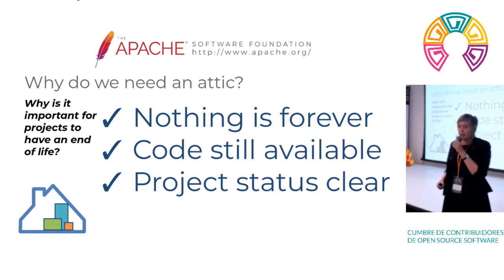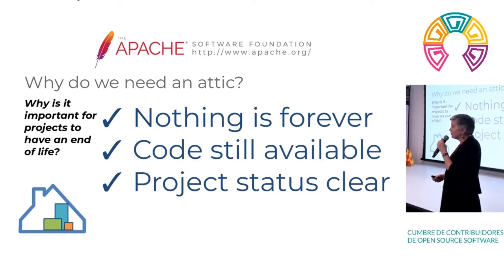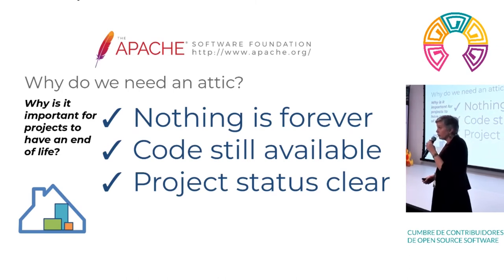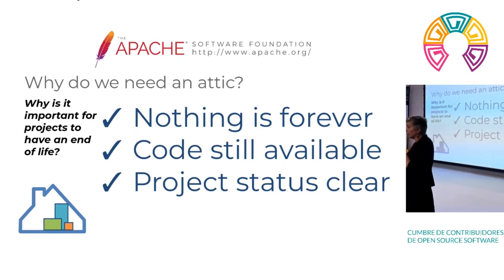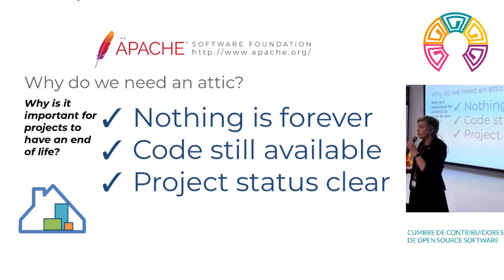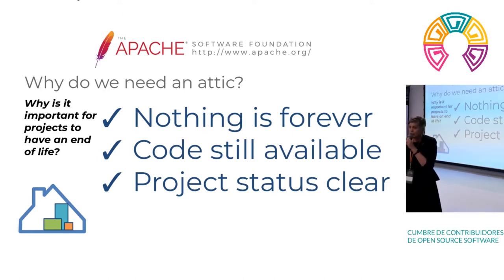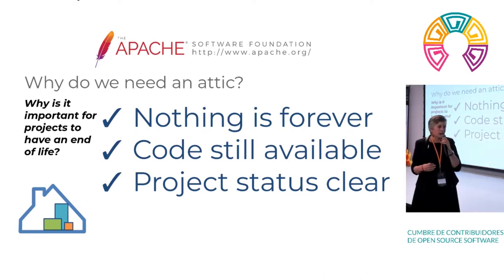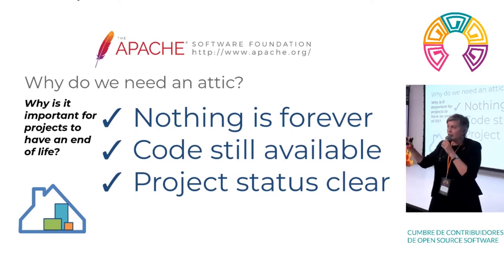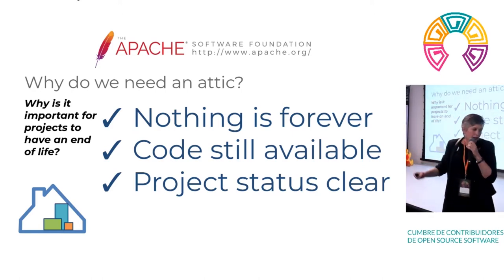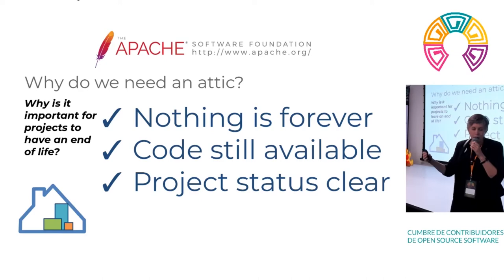There are some projects that have a very long lifespan — Tomcat and HTTPD are very good examples of projects that live a long time. But some projects just don't, and that's okay — that's normal. Software can sometimes have a very short lifespan, and it's important to be transparent about that, to accept it, and to make sure there's a way to publish and make that information public.